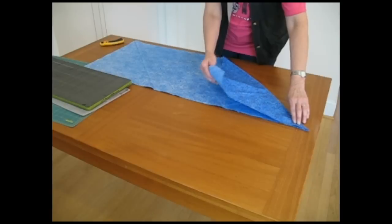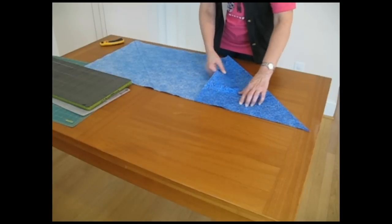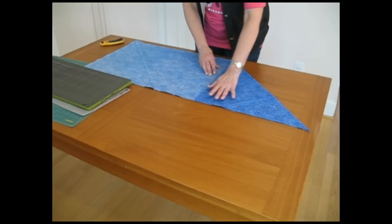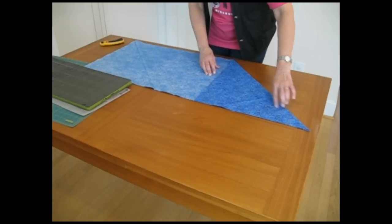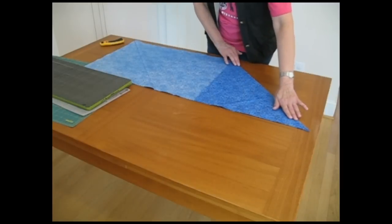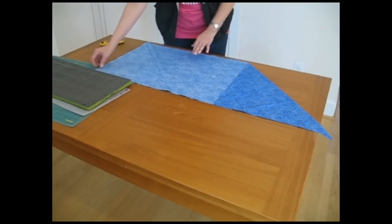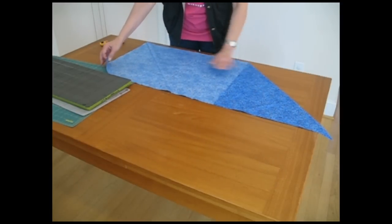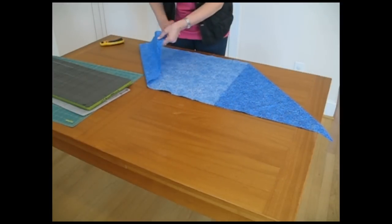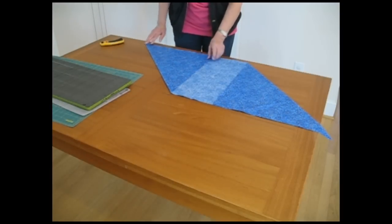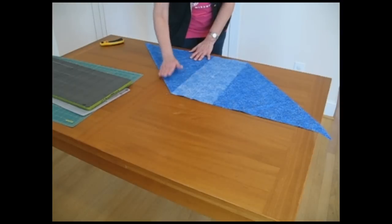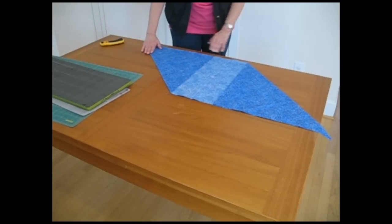It's important to fold this up at a 45 degree angle and you'll have a straight edge here and a bias edge here. You press this bias edge very sharply, being careful not to stretch it. Then you go to the other end of the fabric and bring the straight edge together and press this bias edge.